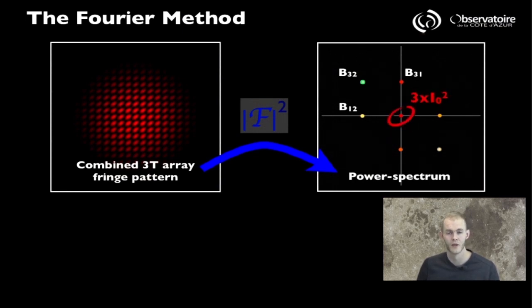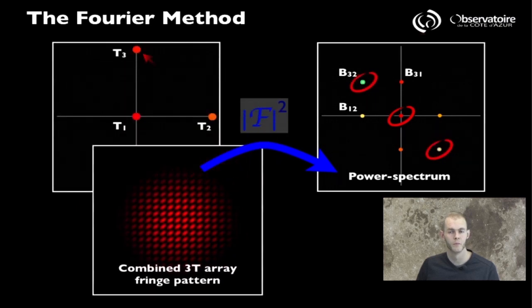And we recognize a central peak which happens to contain some amount of energy which in the notations we will use to describe this case happens to be three times I0 squared. And then we have the data points, the side lobes that correspond to specific baselines in our interferometer.